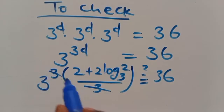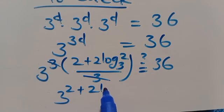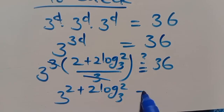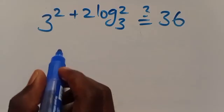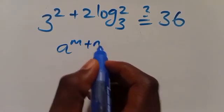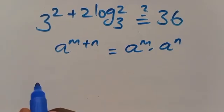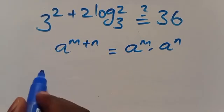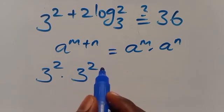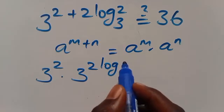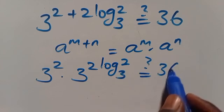The 3D in the exponent and the denominator cancel out, leaving us with 3 to the power of (2 plus 2 multiplied by log₃2). Applying the exponent addition law, this becomes 3 to the power of 2 multiplied by 3 to the power of 2 multiplied by log₃2, which equals 9 multiplied by 3 to the power of 2·log₃2.